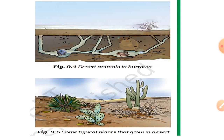Photosynthesis is carried out by the stem, which is covered with a thick waxy layer that helps retain water in the tissue of the cactus. Most desert plants also have roots that go very deep into the soil for absorption of water. In this manner, we have seen both adaptations in animals and in plants — these are the ways animals and plants are adapted in desert conditions.